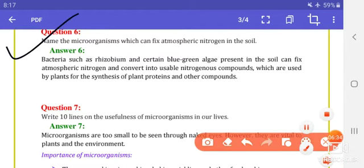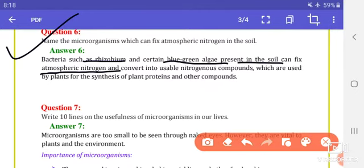Question 6: Name the microorganisms which can fix atmospheric nitrogen in the soil. Answer: Bacteria such as rhizobium and some blue-green algae that are present in the soil can fix atmospheric nitrogen and convert it into nitrogenous compounds.